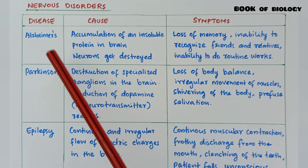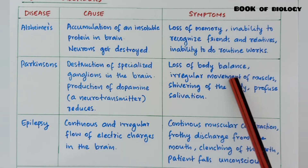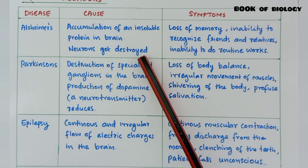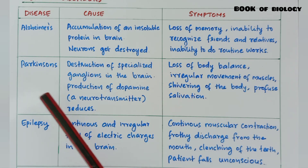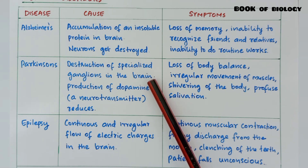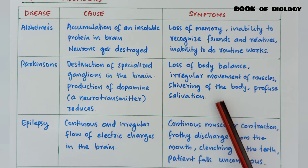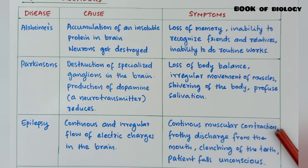Next topic: nervous disorders. Alzheimer's — cause: accumulation of an insoluble protein in the brain, neurons get destroyed; symptoms: loss of memory, inability to recognize friends and relatives, inability to do routine works. Parkinson's — cause: destruction of specialized ganglions in the brain, production of dopamine neurotransmitter reduces; symptoms: loss of body balance, irregular movement of muscles, shivering of the body, profuse salivation. Epilepsy — cause: continuous and irregular flow of electric charges in the brain; symptoms: continuous muscular contraction, frothy discharge from the mouth, clenching of teeth, patient falls unconscious.